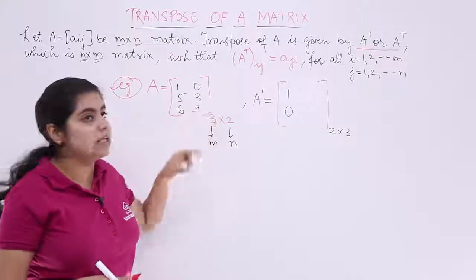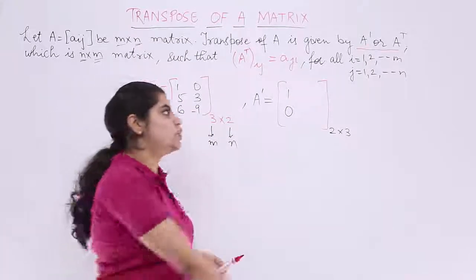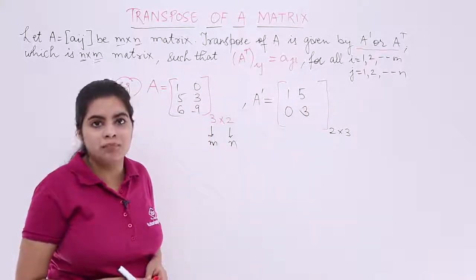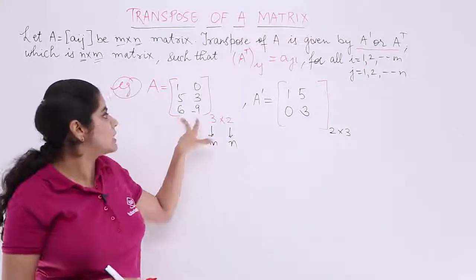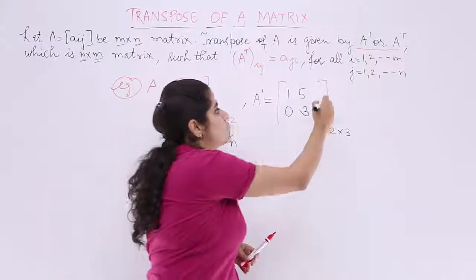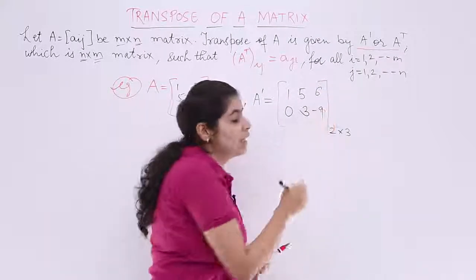What about the second row? 5, 3 is the second row. The story again changes: 5, 3 becomes your second column. Again, what about the next thing? We have 6, minus 9 as the third row. Now it changes to 6, minus 9 in the third column.